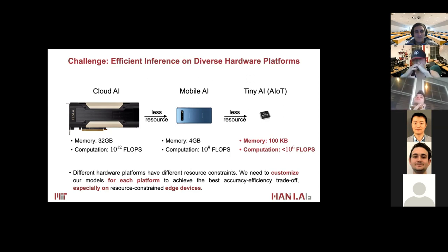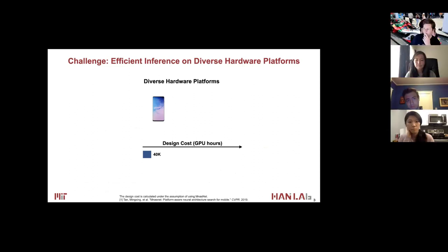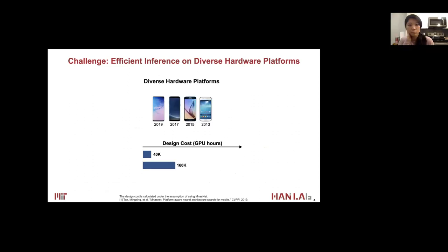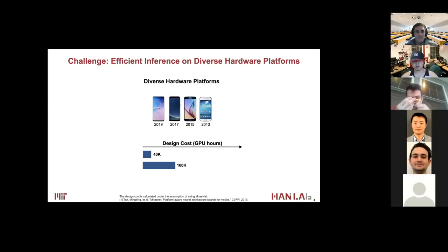Given a diverse spectrum of hardware platforms, it is very challenging to design specialized neural networks for each case. Assuming we are using neural architecture search to auto-design specialized models, it will take around 40K GPU hours to get a specialized model for a single device. This is affordable for big companies like Google, but when we have more devices — for example, four — we need to repeat this process, which increases the total GPU hours by four times, from 40K to 160K GPU hours.